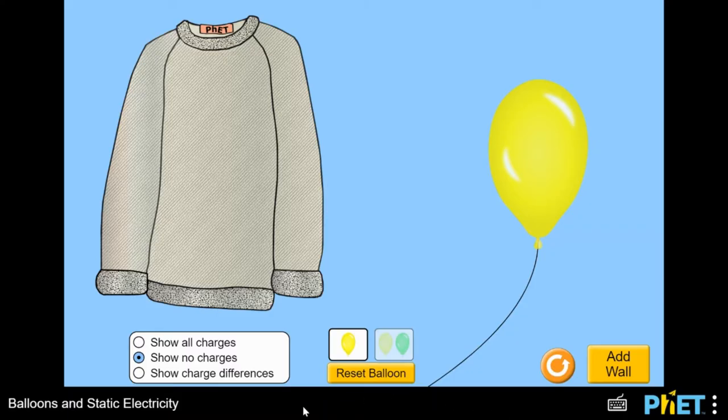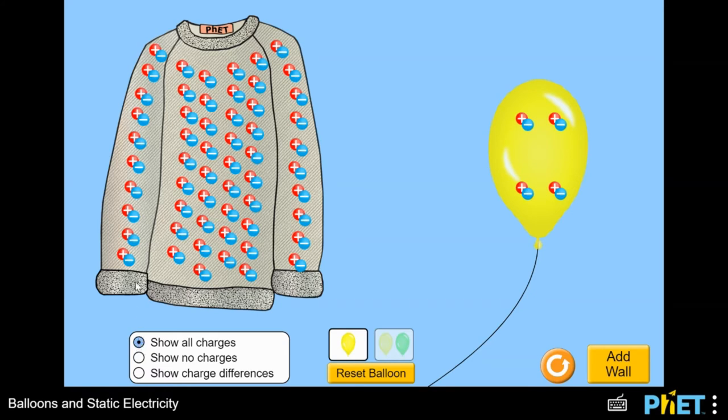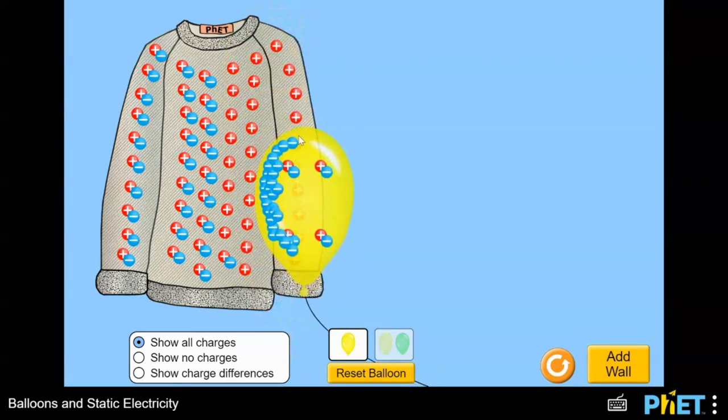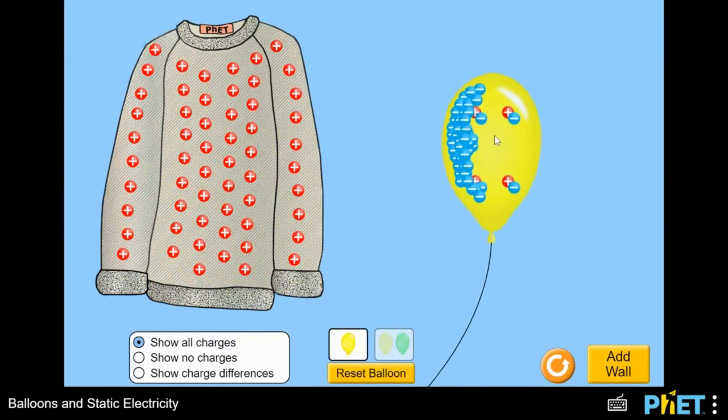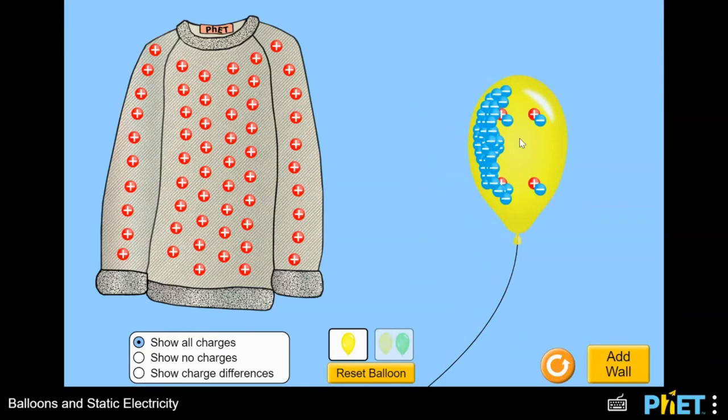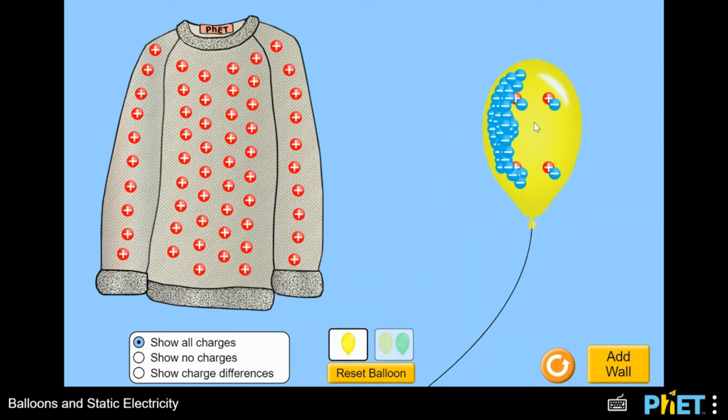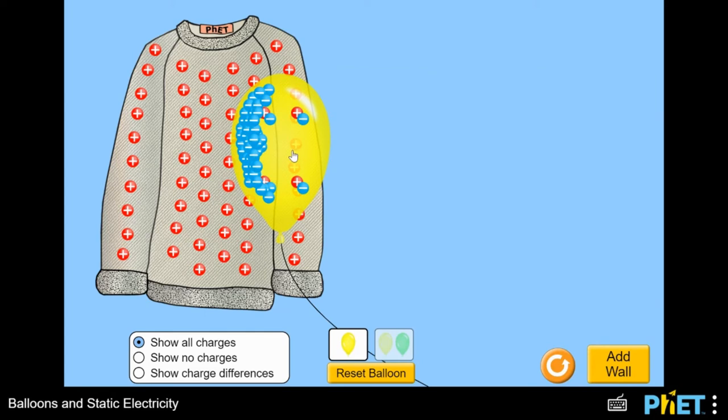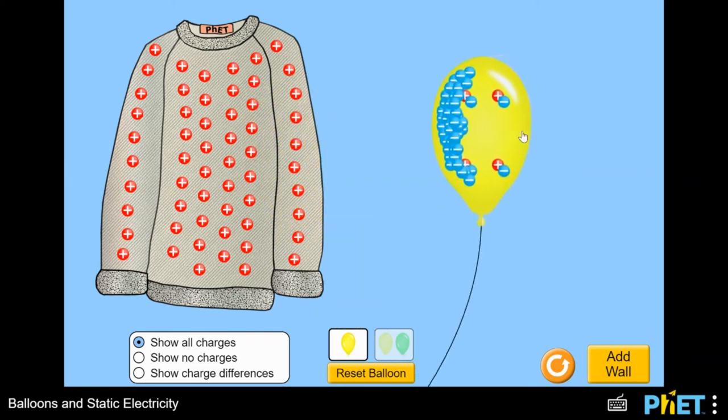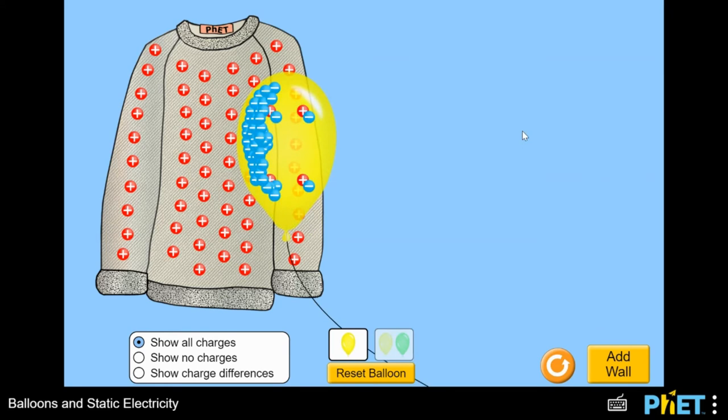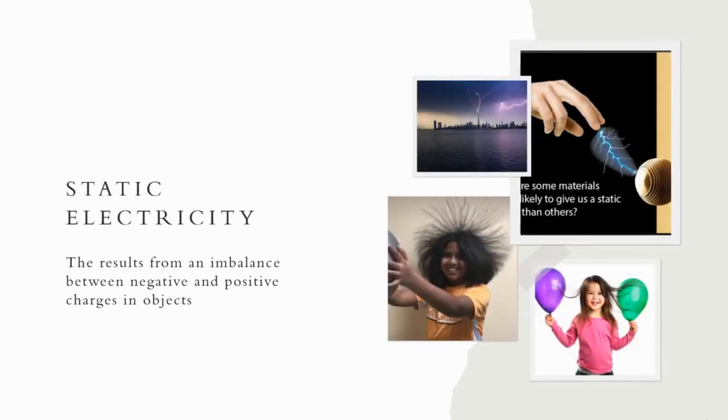For example, the sweater and rubber balloon initially have neutral charges because their protons and electrons are in equal amount. Now that I'm rubbing the balloon on the surface of the sweater, the balloon gains electrons and the sweater loses its electrons. The sweater that loses the electrons becomes positively charged, and the rubber balloon that gains electrons becomes negatively charged. And as I release the rubber balloon, it moves closer to the sweater. This happens because the sweater and the rubber balloon have now oppositely charged that made them attracted to each other. This charging process is commonly known as static electricity, when there is an imbalance between negative and positive charges in objects.